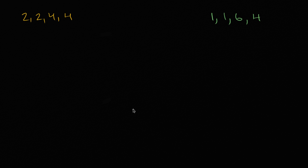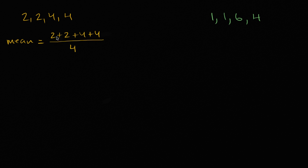The first thing I want to think about is: is there a number that can give me a measure of center of each of these data sets? One way we know how to do that is by finding the mean. For this first data set, the mean is two plus two plus four plus four, divided by four data points. Two plus two is four, plus four is eight, plus four is twelve — so twelve over four, which equals three.